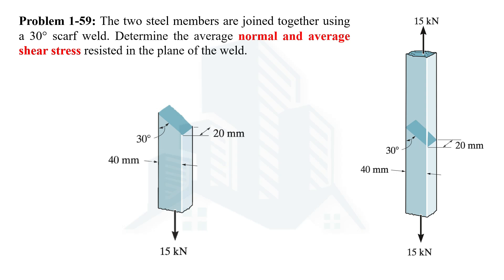So if you are taking either the bottom portion or the top portion, that particular portion will also be in equilibrium. In other words, if the 15 kilonewton force is acting downward on this member, in order to balance it there should be an equal magnitude force acting upon this body so that this steel member would be in equilibrium. Therefore a 15 kilonewton force is also applied to the top portion of this bottom steel member.